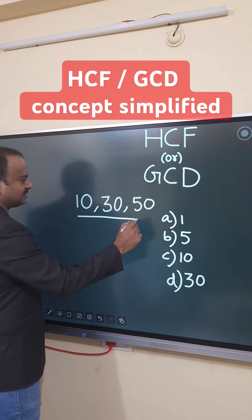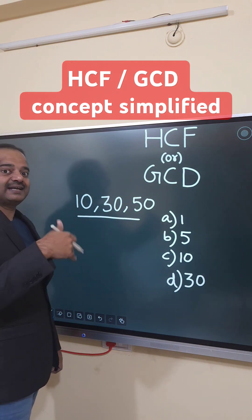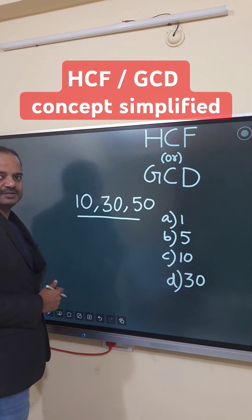Now, I have three numbers: 10, 30, and 50. I need to find which is the greatest number that divides all the three numbers.